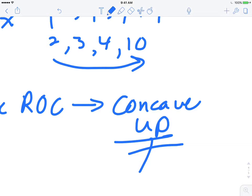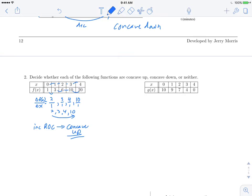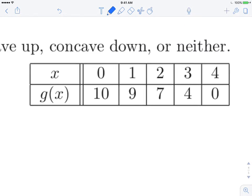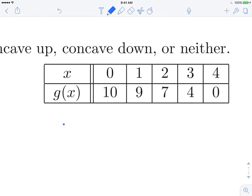That's what I get for trying to do two lines at once. There we go. All right, that one's concave up. The next one, again, we're doing change in g(x) divided by change in x.